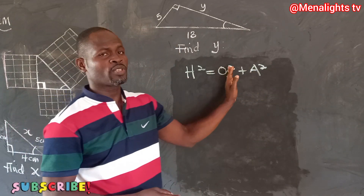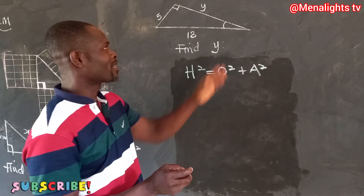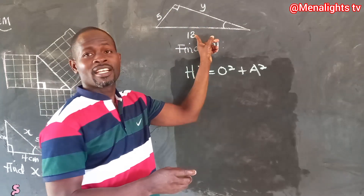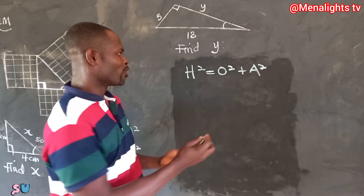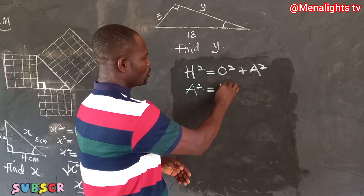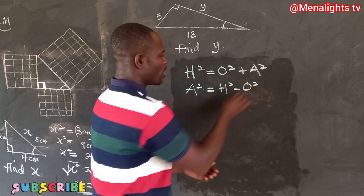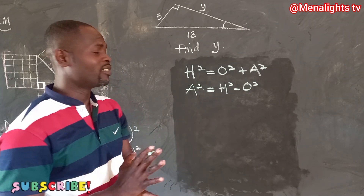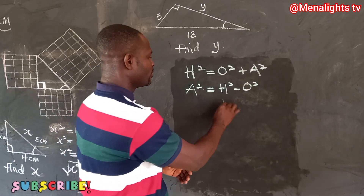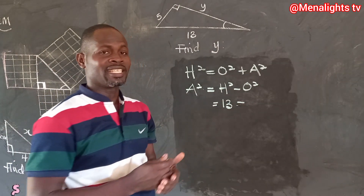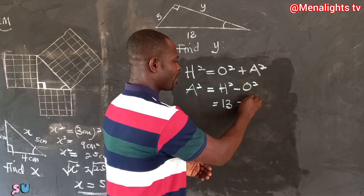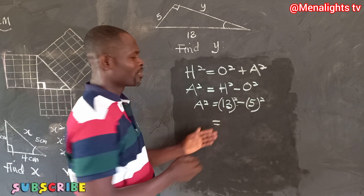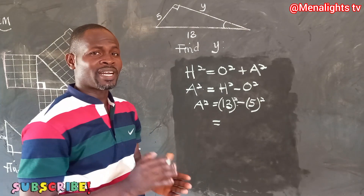We know that the hypotenuse squared equals opposite squared plus adjacent squared. But here, since the angle is here, this is the opposite, this is the hypotenuse, and this is the adjacent. So we can say that adjacent squared equals hypotenuse squared minus opposite squared. To find the adjacent squared, we substitute the values: the hypotenuse is 13 and the opposite is 5. So 13 squared equals 13 times 13, which gives us 169.